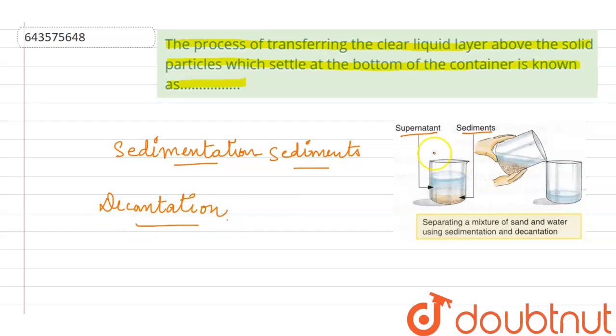Decantation. In decantation, the supernatant, which is the clear liquid, is poured out into a different container, and the sediments or impurities are left behind in the same container.